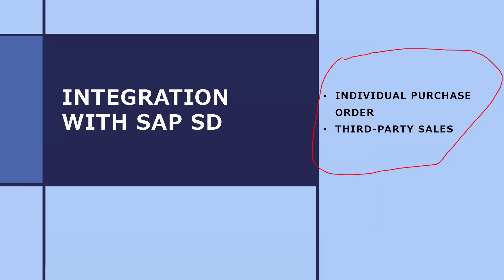They have also asked: what is third party sales? Same process — customer walks in, sales order is created. Based on the sales order, purchase requisition is created. Based on the purchase requisition, a purchase order is created. But there is no goods receipt inside the company, because the material will be delivered directly from the vendor's plant to the customer's place. So the material movement will not happen inside the company. This is the key difference between third party and individual purchase order — in individual purchase order, inventory will be updated; in third party, inventory will not be updated.